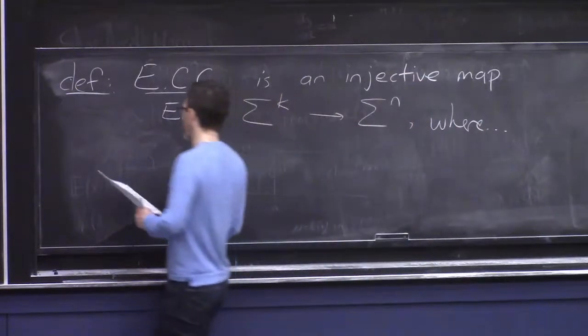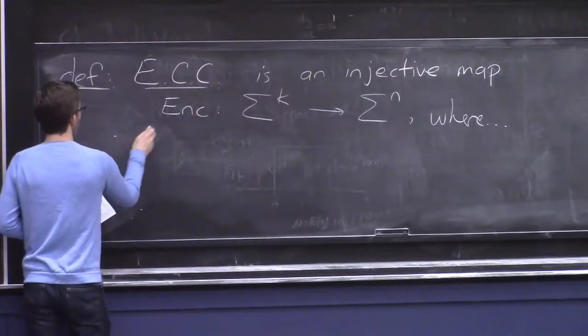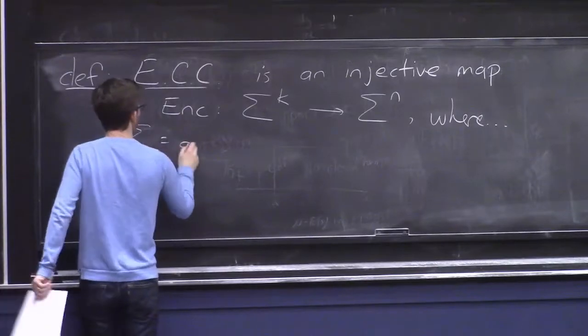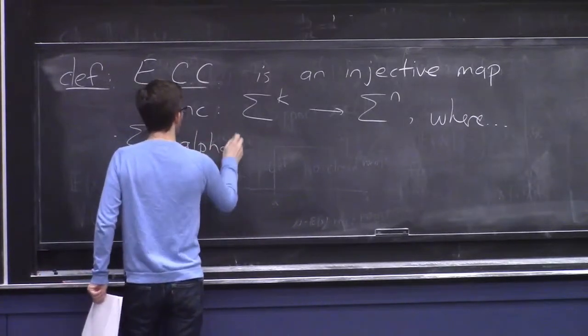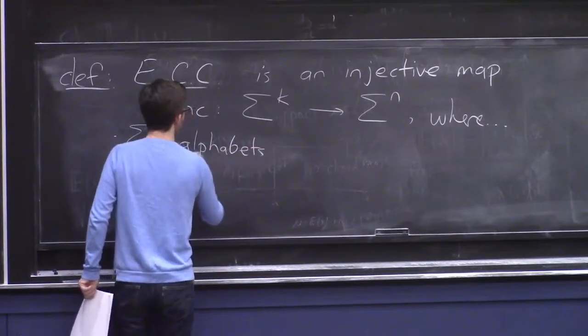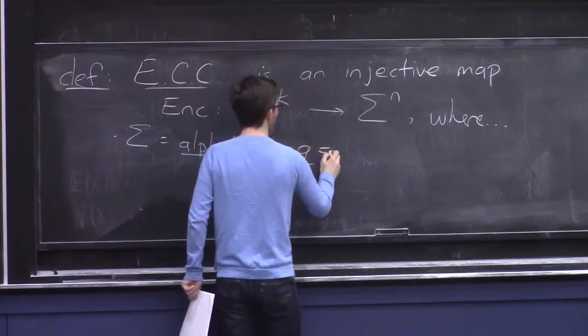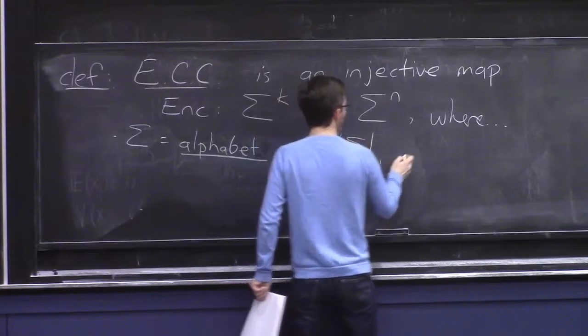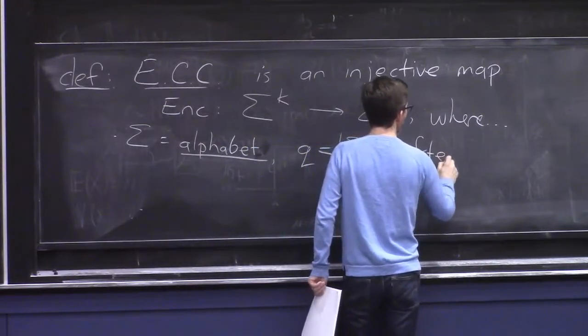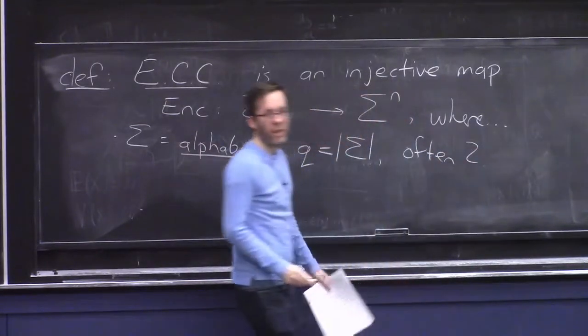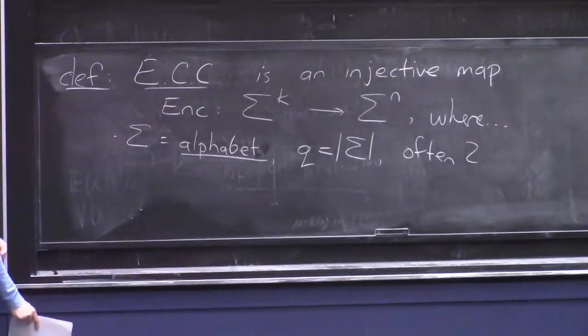Okay, there are several things to add here. First of all, Sigma is the alphabet, sort of the symbols for the messages and their encoding. And we'll often write Q for the cardinality of Sigma. And Q is often, but not always, 2. If you're transmitting bits, then it'll be 2. But if you think of your data packaged into bytes or larger packets, then Sigma might be larger.